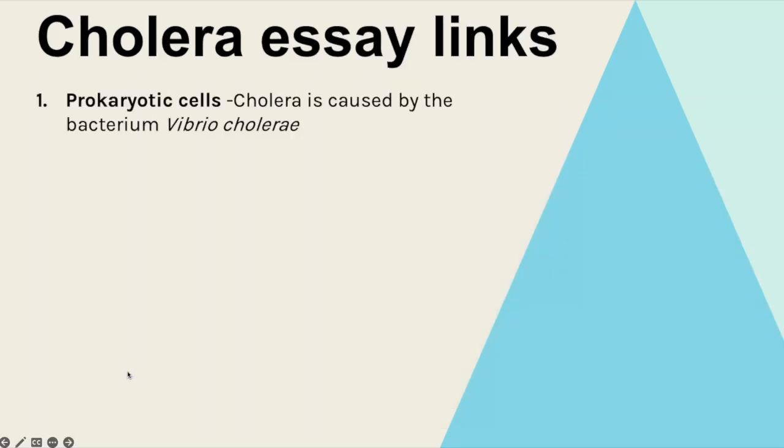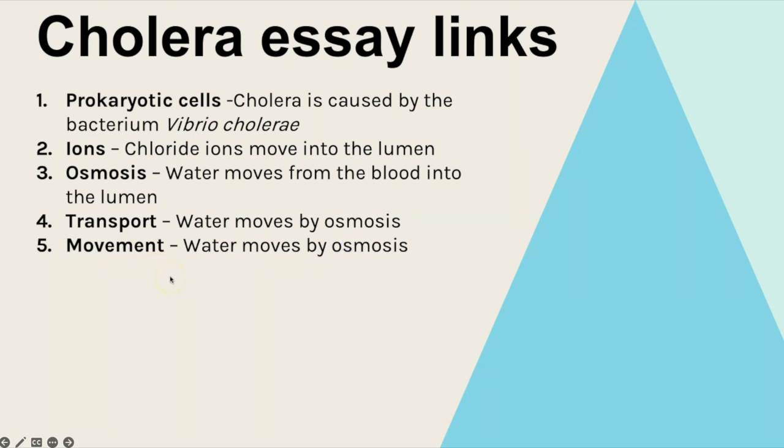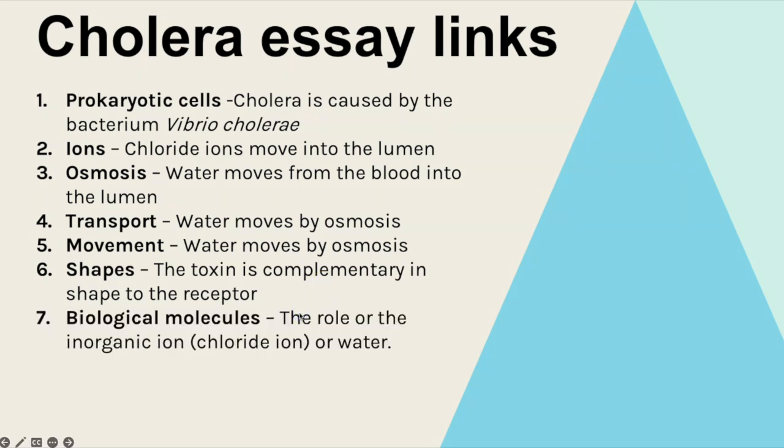So potential essay links then. There's the potential to link it to an essay title on prokaryotic cells because cholera is caused by a bacterium. You could have it linked to ions because it's the chloride ions moving into the lumen that lowers the water potential that results in osmosis occurring. So it could link to a title based on osmosis or water potentials or transport across membranes as well. It's a type of movement, this movement of the chloride ions, movement of water. So if there was an essay somehow linked to movement, as long as it was relevant in terms of movement within an organism or potential across a membrane then it would work. It could also be linked to the idea of shapes fitting together because that toxin is complementary in shape to the receptor that it binds to which then goes ultimately to lead on to the release of chloride ions. And then biological molecules, it could link to a title on that because chloride ions are a biological molecule and they are what are lowering the water potential resulting in this osmosis happening.